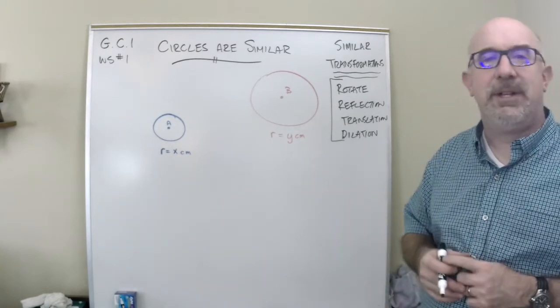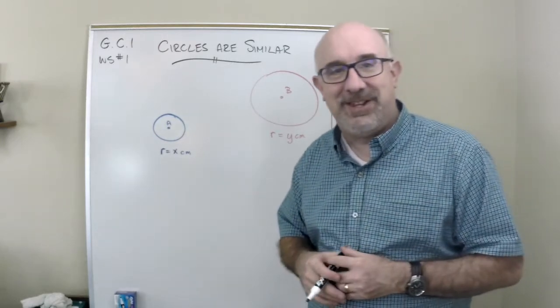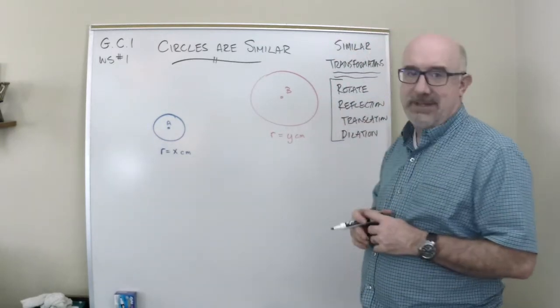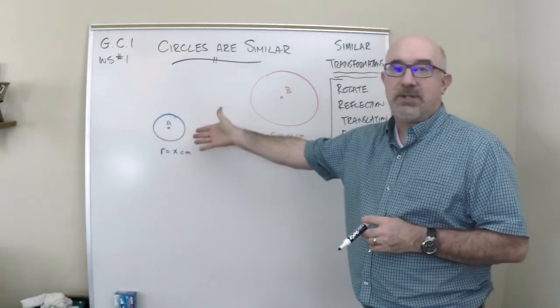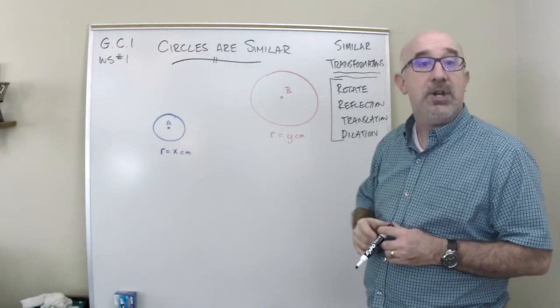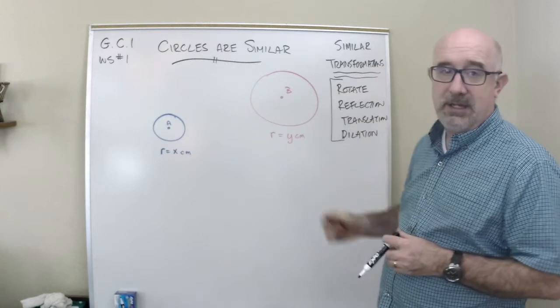Now, circles are a little bit different. They don't have angles, those types of things do them, but the concept would be the same. Can I map one circle onto the other using only these guys here?